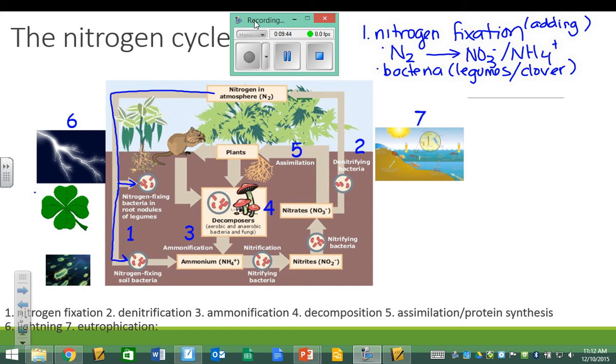The other thing that can accomplish nitrogen fixation is lightning. Now obviously lightning is not something that's super reliable. And so these bacteria that live on the roots of plants would be a much more predictable and reliable way to get nitrogen converted from N2 in the atmosphere to some more usable, readily accessible form.